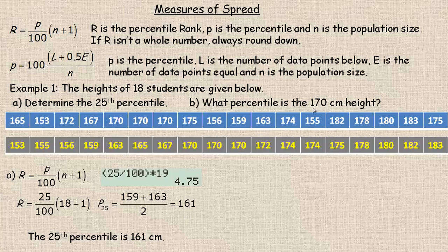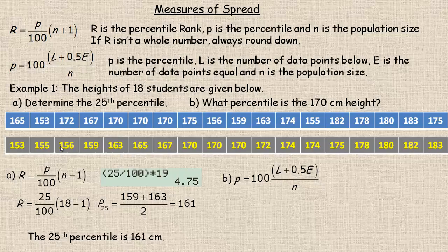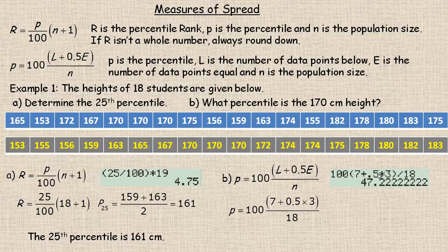Part B asks: what percentile is the 170 cm height? We use the second formula. L is the number of data points below 170 — counting gives 7. E is the number equal to 170 — notice there are three 170s, so E = 3. The calculation is 100 times (7 + 0.5 × 3) divided by 18, and we get 47.22. So the 170 cm height is at the 47th percentile.